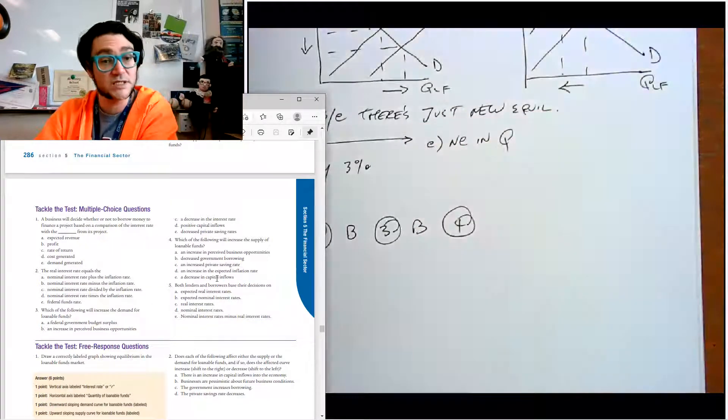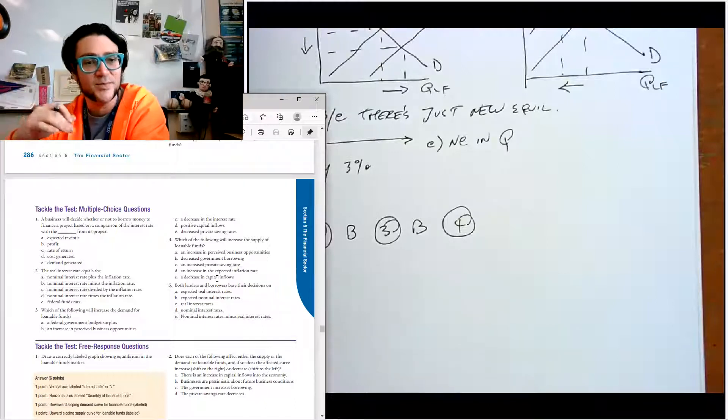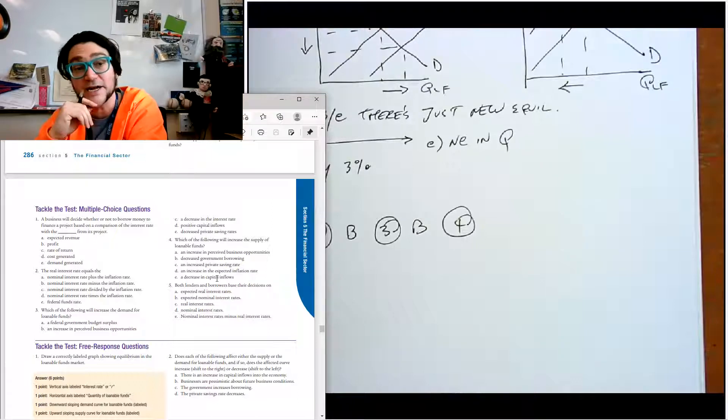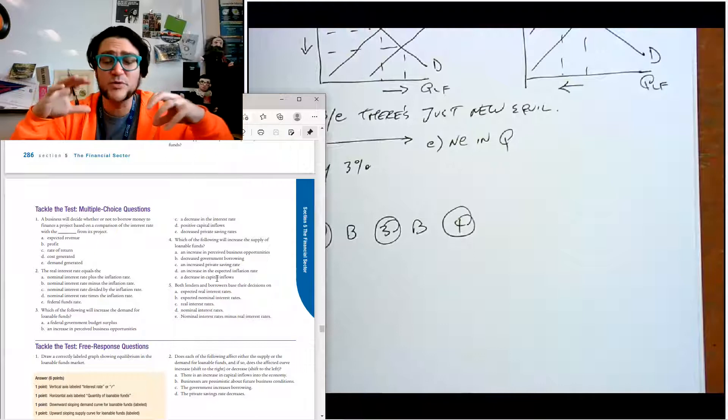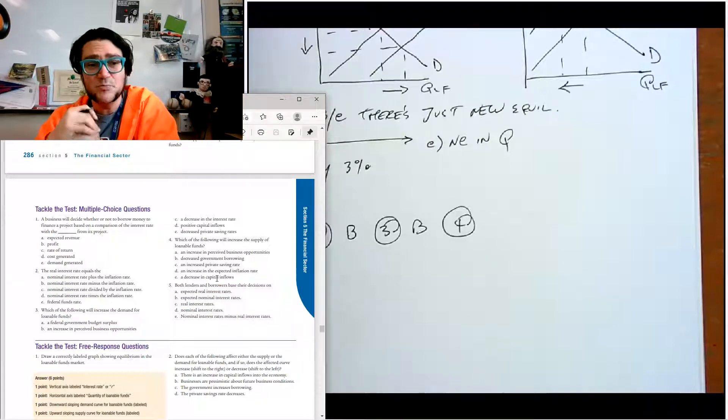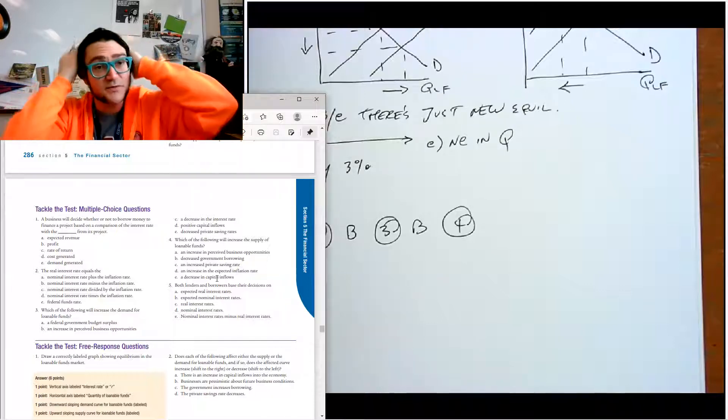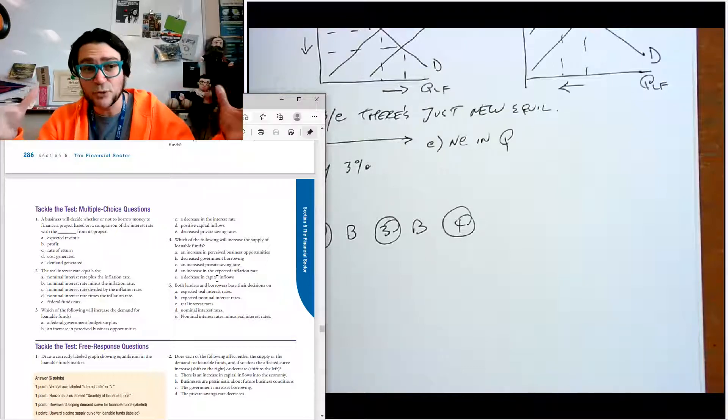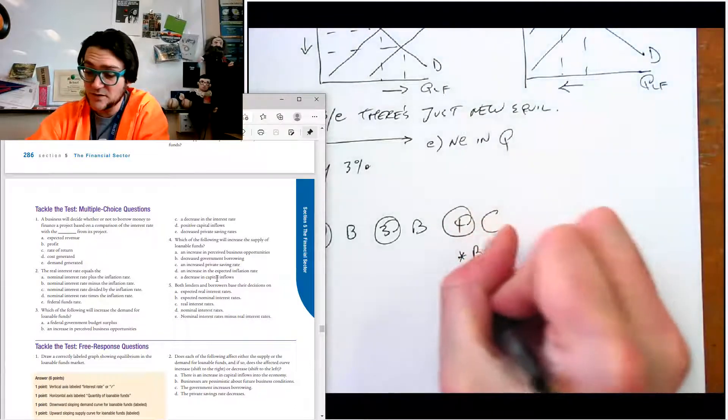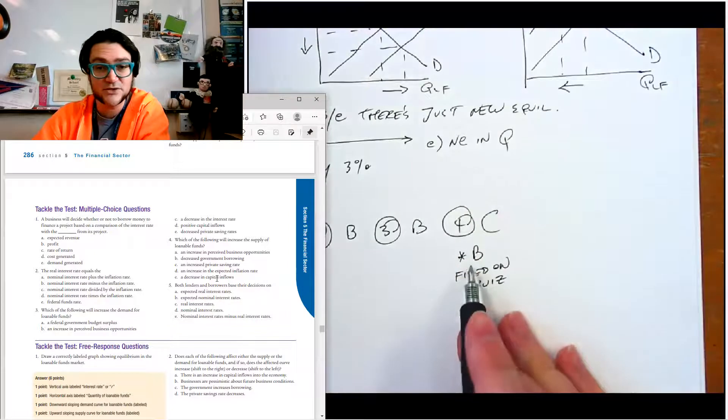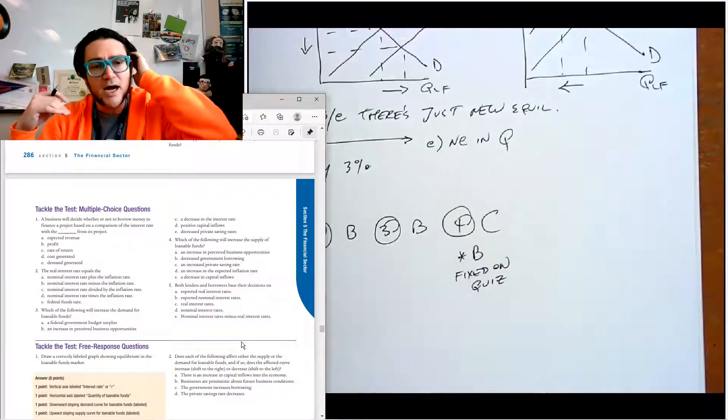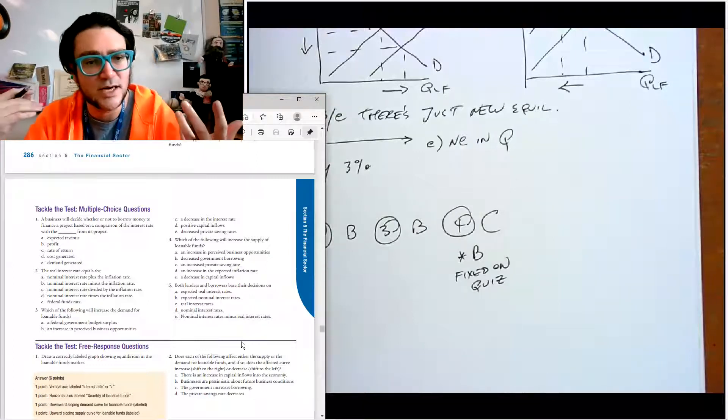Number four, what will increase the supply of loanable funds? This is basically the same question but now it's saying increase the supply. Increasing perceived business opportunities, no, because that's the borrowing. Decreased government borrowing - I would argue that B is correct because if there's borrowing, some economists model it as a change in supply because they vacuum up the supply before it gets to everybody else. So actually B could be correct, because it's increasing the supply available for everybody else. C is what they're probably wanting you to say, an increased private saving rate, because that actually increases the supply of loanable funds. So I'm going to say C with a little asterisk and say that B is also correct. I'm not going to have that answer on the quiz, just C. Increasing the expected inflation rate would affect loanable funds demand. Decreasing capital inflows affects money supply, but it's decreasing the money supply.